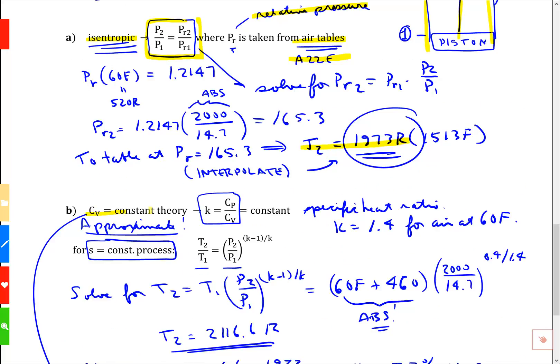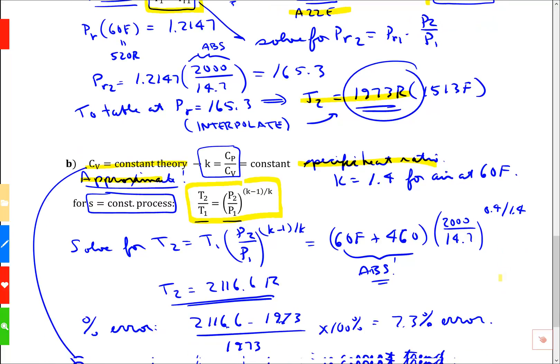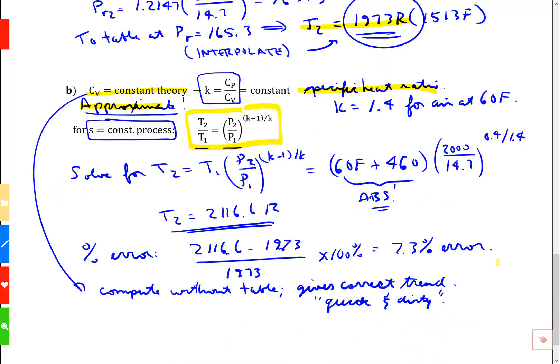There's also a CV equals constant theory that's approximate. It involves a collection of algebraic relationships involving the specific heat ratio. This gives us a quick and dirty answer. The value isn't that great, but sometimes engineers need a trend. And if you remember that, all will be well.